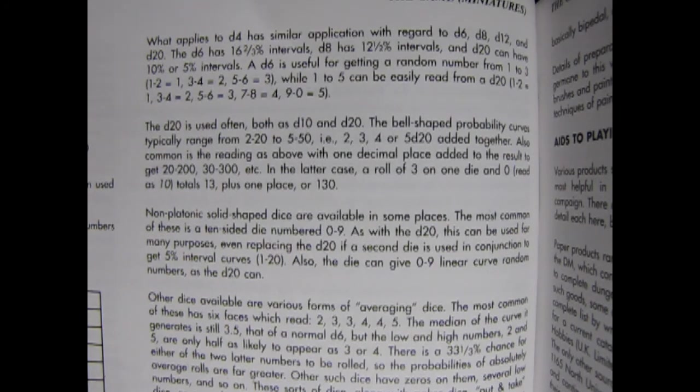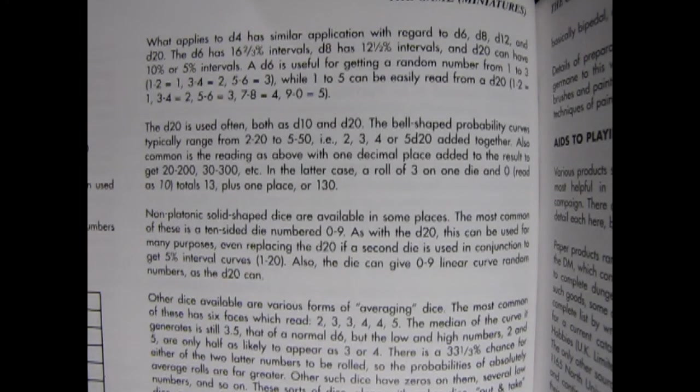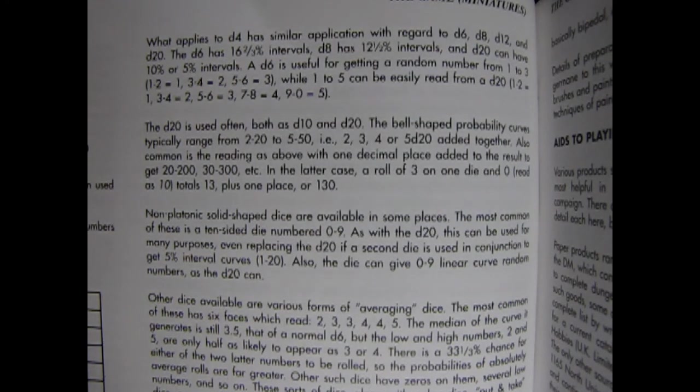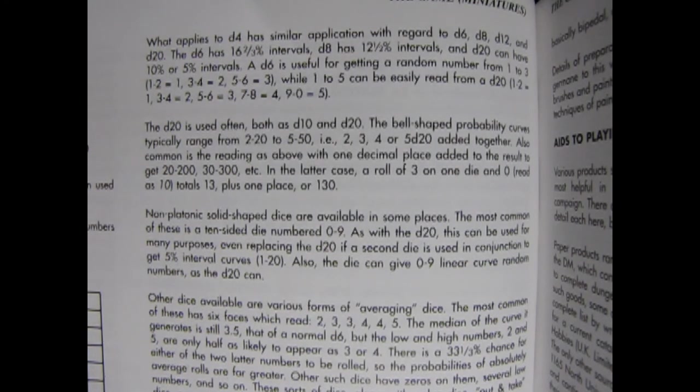The D20 is used often both as D10 and D20. The bell-shaped probability curves typically range from 2 to 20 to 5 to 50, i.e. 2, 3, 4, or 5 D20 added together. Also common is the reading as above, with one decimal place added to the result to get 20 to 200, 30 to 300, etc. In the latter case, a roll of 3 on 1 die and 0 read as 10, the total is 13 plus one place, or 130.